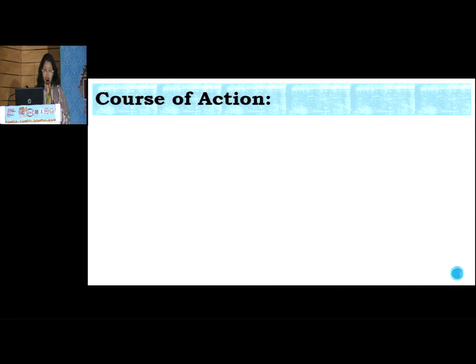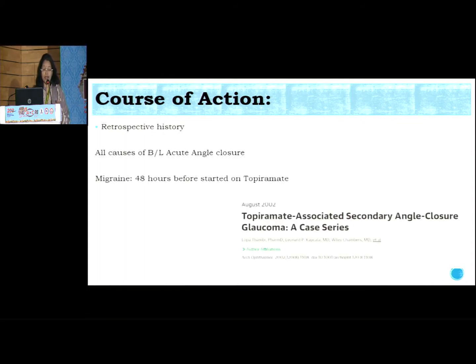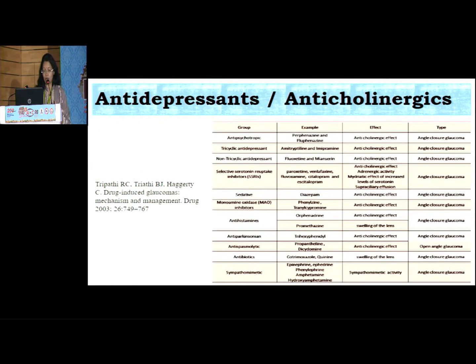What was the course of action? As we saw in Dr. Manoj's presentation, sometimes we need to take retrospective history of medications the patient might have taken. She had been advised topiramate for migraine. So sometimes migraine itself may not be associated, but medications the patient is using for these problems can precipitate bilateral acute angle closure glaucoma. There is a list of such medications — we won't go into detail as we already saw a nice presentation on this.